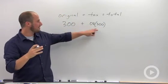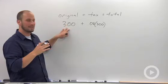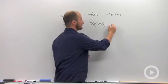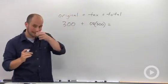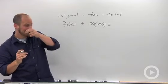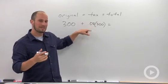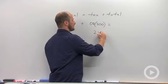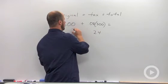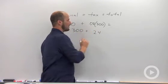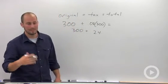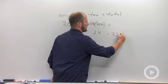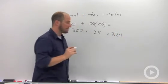We add our tax amount to our original amount, and that's going to be our total. 8% of 300: 8 times 3 is 24, accommodate for your decimal — this just turns out to be 24. So 300 plus 24 is 324.